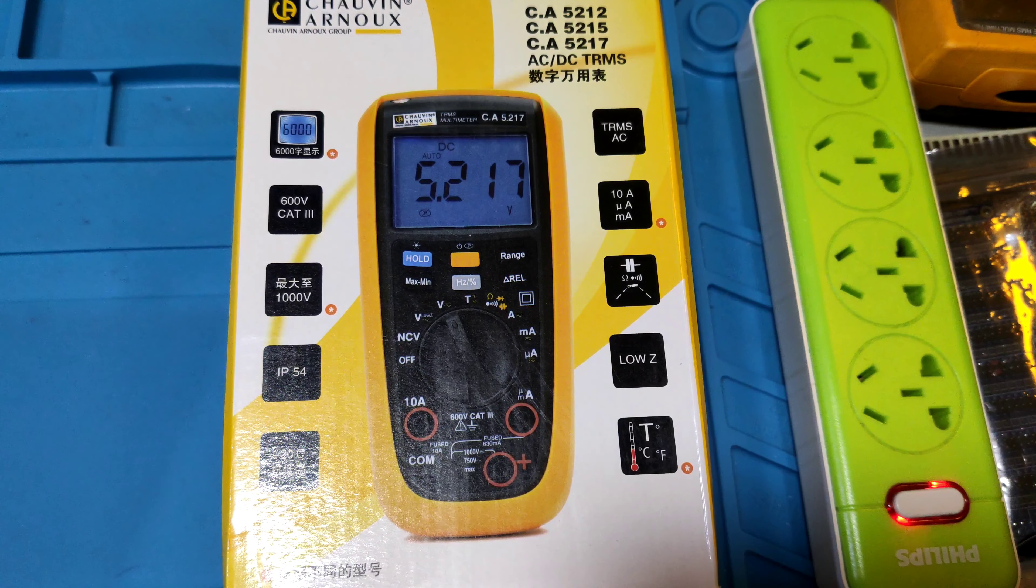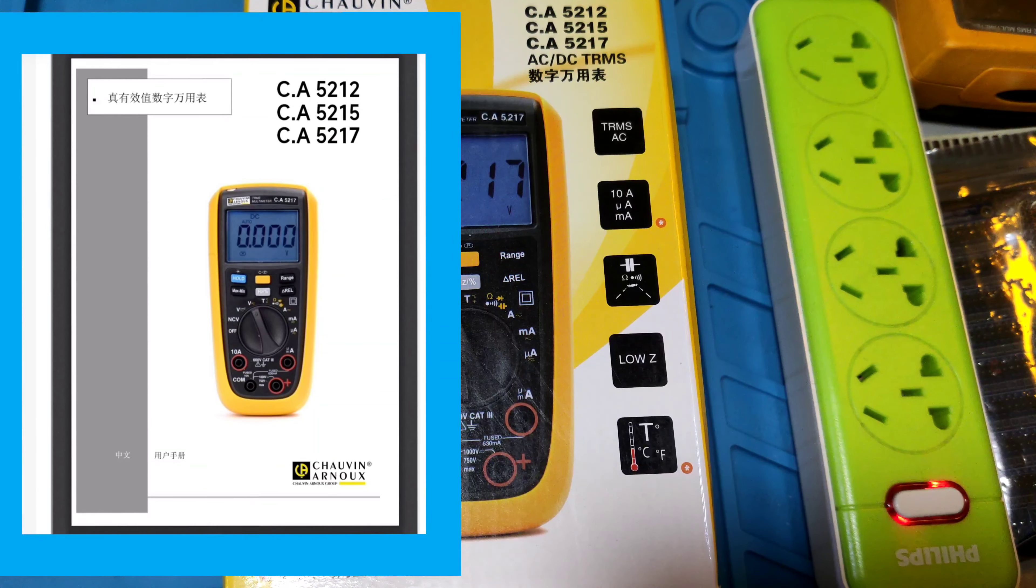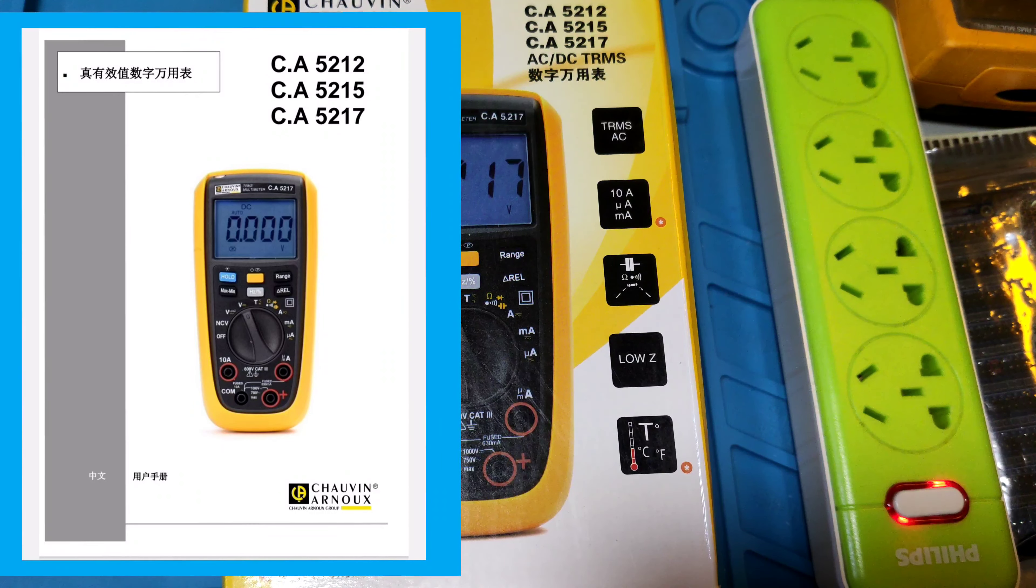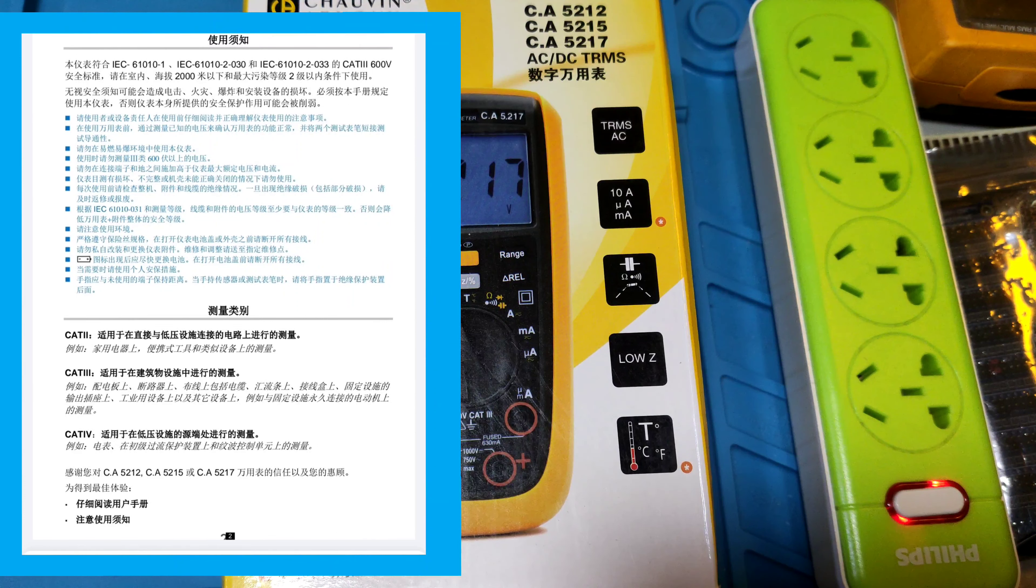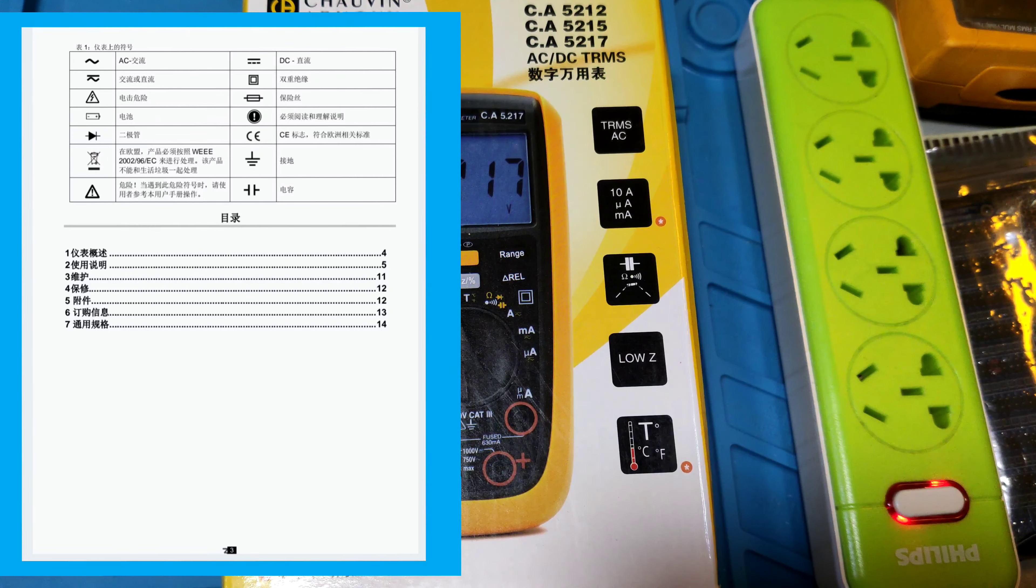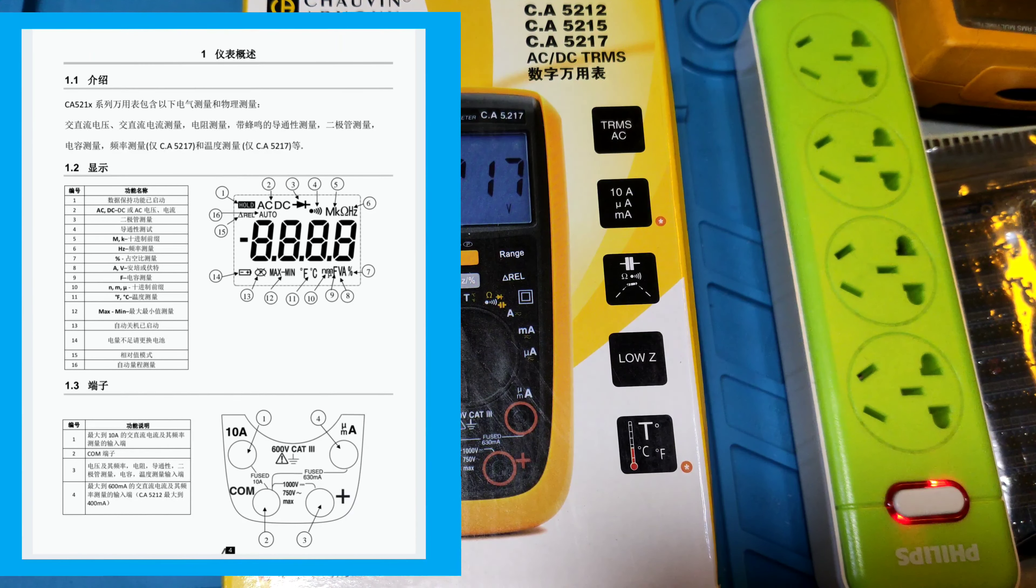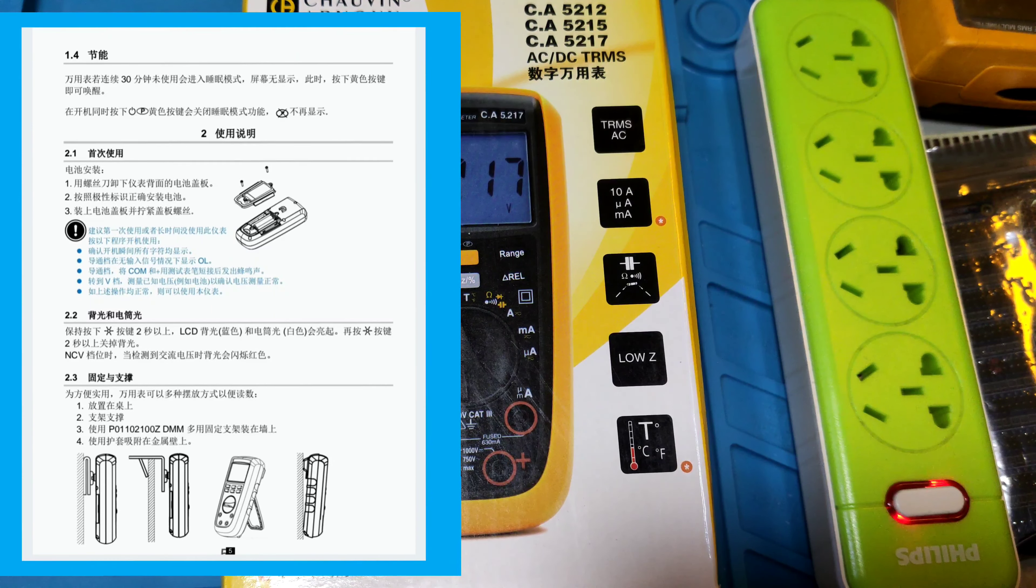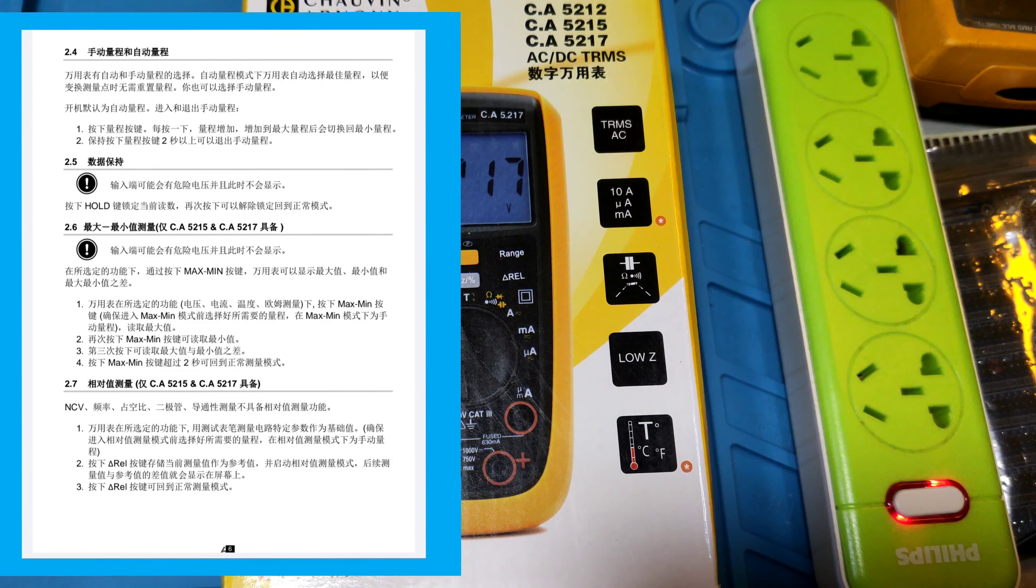Charon Arons CA5215. It is a cat-free 600V, 4000 count LCD screen multimeter. It yields 1.5V, 2P of AA battery. Its size is 170 x 80 x 50 mm. It weighs 320 grams.